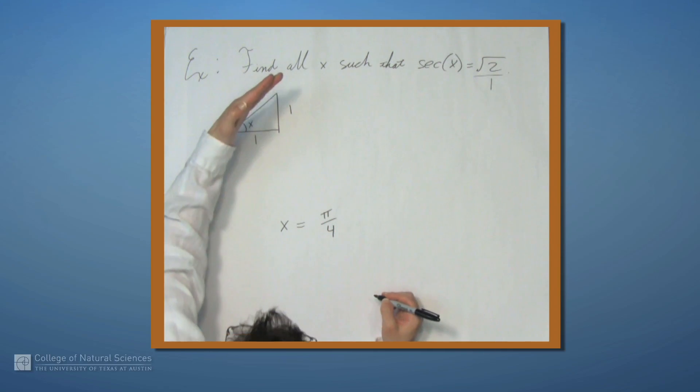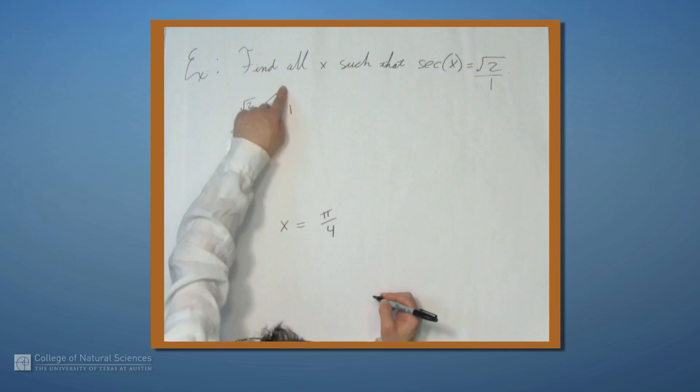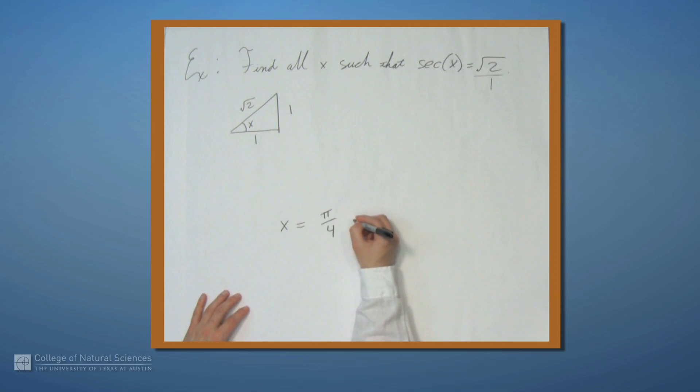But once again, if we start here, we circle all the way around, we can get the same ratio. So we actually get π over 4 plus 2π times k. And again, k is going to be any integer.